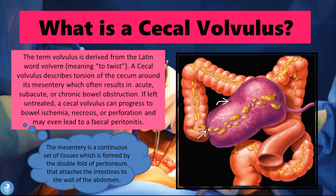Now that we have this twist in the cecum, we're going to have a bowel obstruction. Food and digested matter continuously tries to get into the cecum from the small bowel, but it isn't going any further because there's a blockage. The cecum swells up to quite a large mass and is displaced out of its original position, higher up in the abdomen. Because of this process, we can have bowel ischemia, necrosis, and the cecal mass can perforate into the abdomen, leading to a fecal peritonitis.